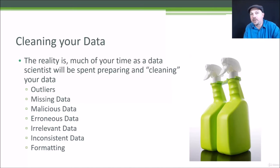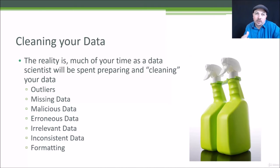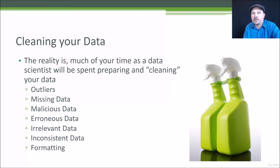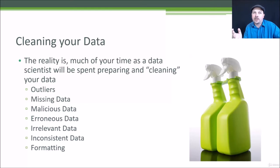Missing data: what do you do when data is just not there? Going back to the weblog example, you might have a referrer in that line or you might not. What do you do if it's not there? Do you create a new classification for missing or not specified? Or do you throw that line out entirely? You have to think about what the right thing to do is.